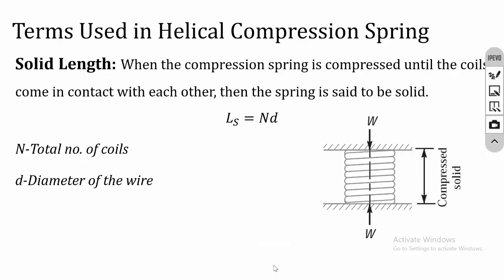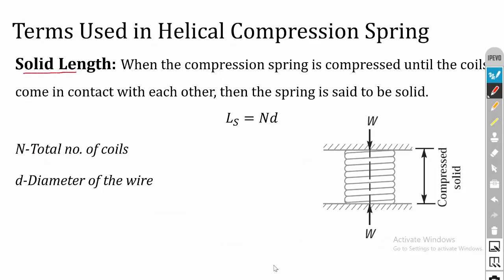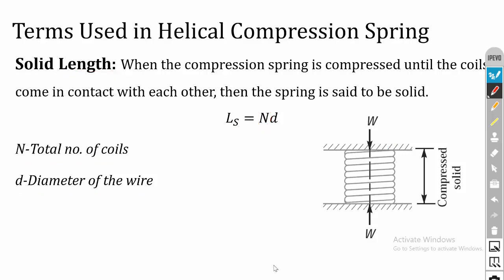Terminology used in helical compression spring — first, solid length. When the spring is fully compressed, there is no gap between two adjacent wires. The length in that state is called solid length, calculated as n × d, where n is the total number of coils and d is the wire diameter.